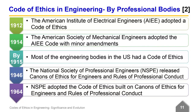In 1912, the American Institute of Electrical Engineers adopted a code of ethics. In 1914, the American Society of Mechanical Engineers adopted the AIEE code with minor amendments. The American Institute of Consulting Engineers, the American Institute of Chemical Engineers, and the American Society of Civil Engineers brought in their own codes. By the year 1915, almost every major engineering body in the US had a code of ethics. In 1946, the National Society of Professional Engineers (NSPE) in the United States released Canons of Ethics for Engineers and Rules of Professional Conduct. In 1964, NSPE adopted the code of ethics, built on the Canons of Ethics for Engineers and Rules of Professional Conduct.